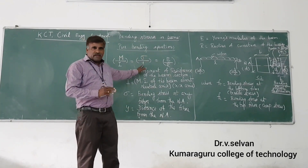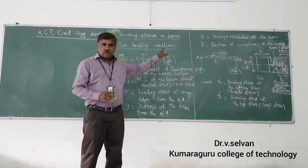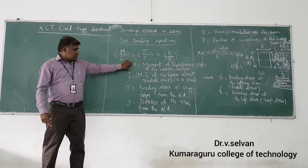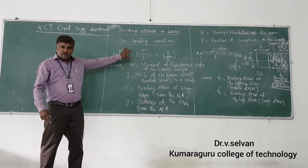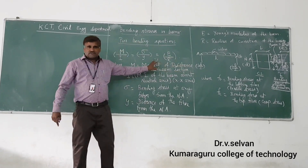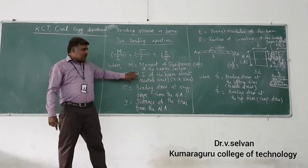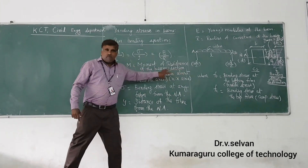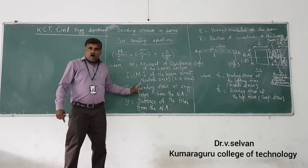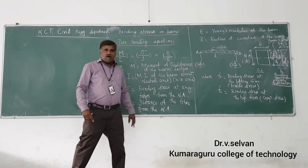For the pure bending equation, where there is no shear force applied, you get only the pure bending — that is called the pure bending equation. In this equation, M is equal to the moment of resistance of the section about the neutral axis, or the maximum bending moment for the given beam section and loading. And I is the moment of inertia of the beam about the neutral axis, that is about the horizontal central axis XX.